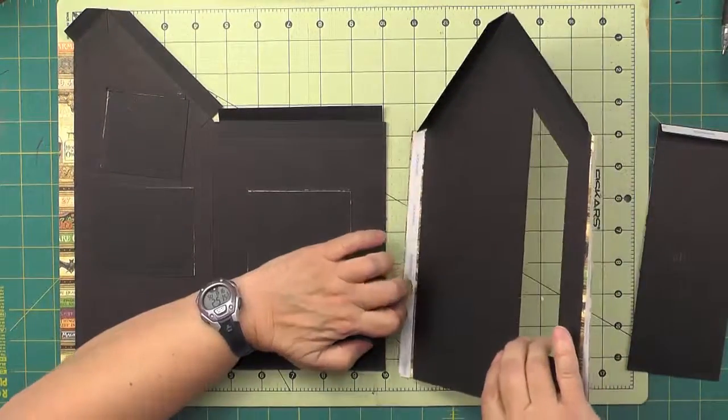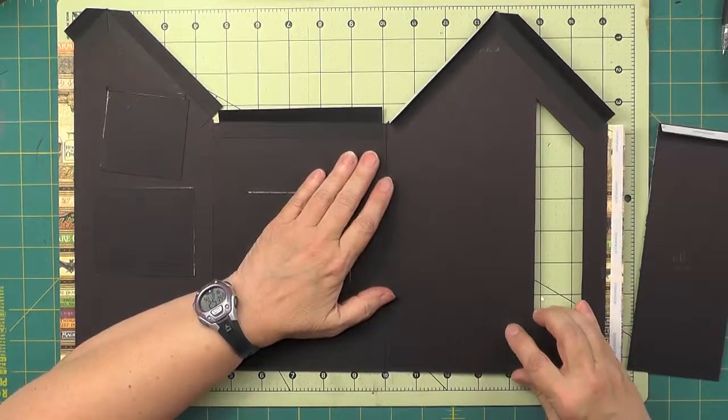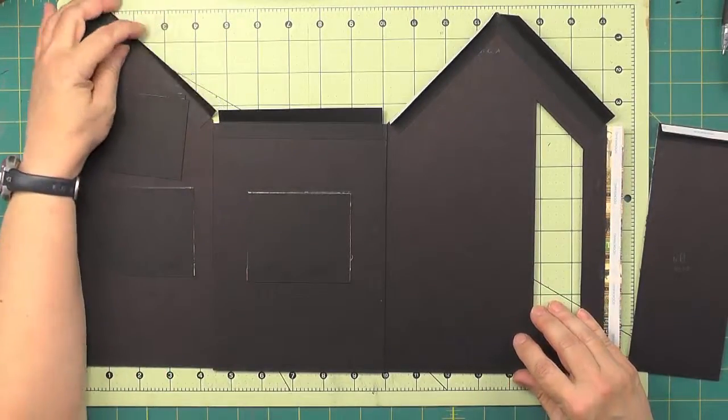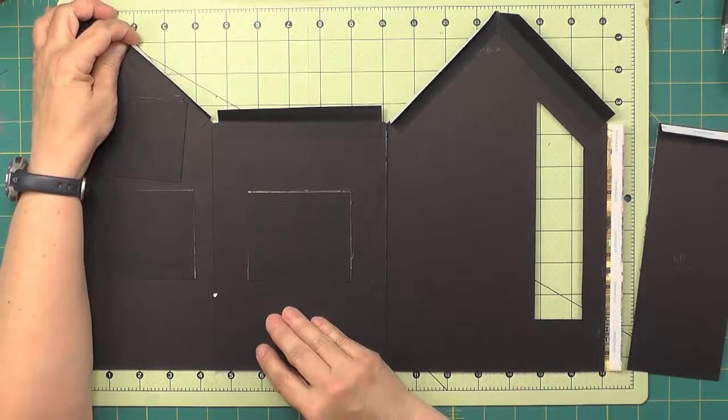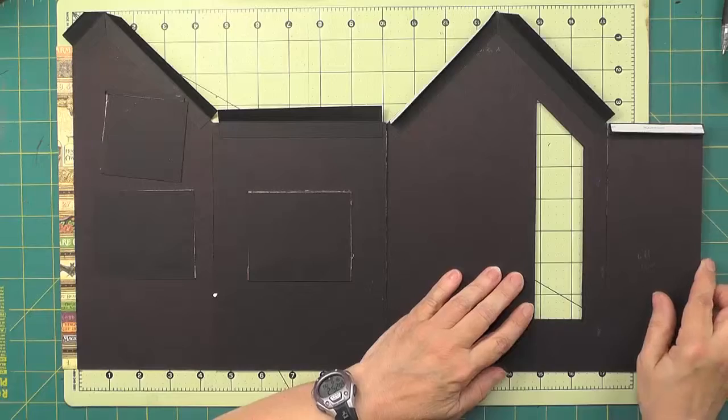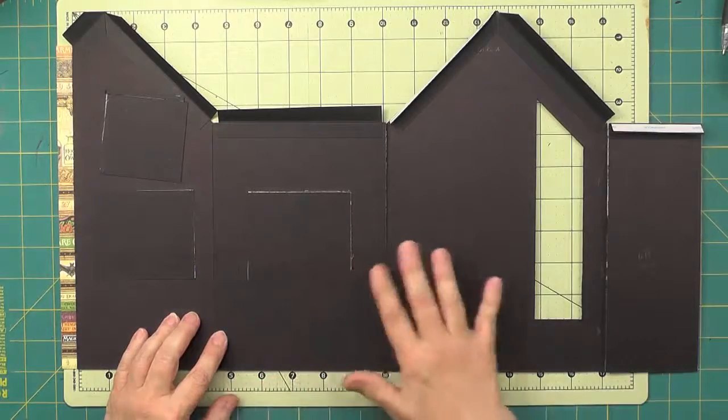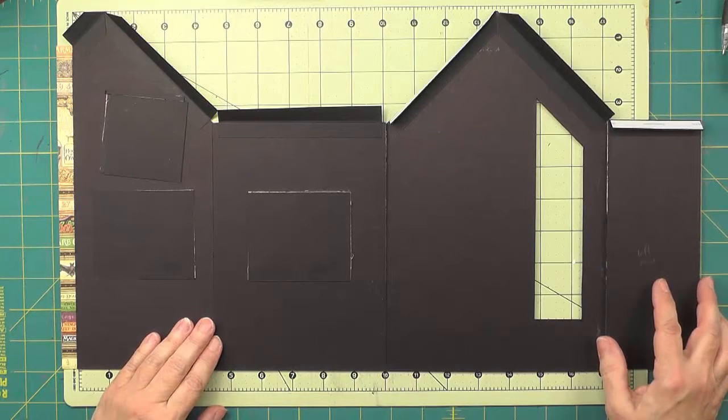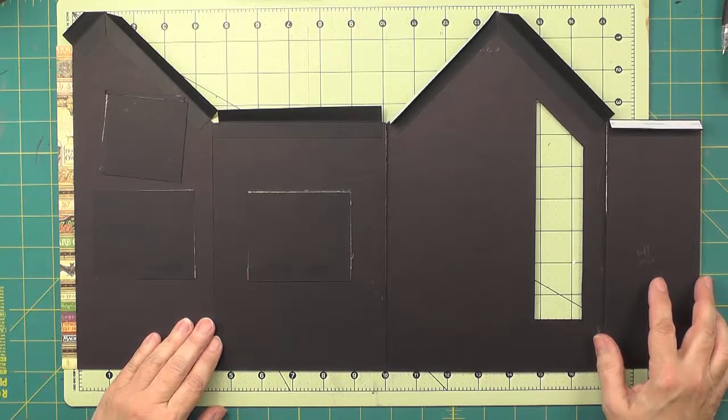I'm just going to use some butt joints here to join the four pieces in a row. They do not join together completely - there's a gap where the tower comes in. So I'll use three pieces of our cardstock joining strips with some butt joints to put these units together.